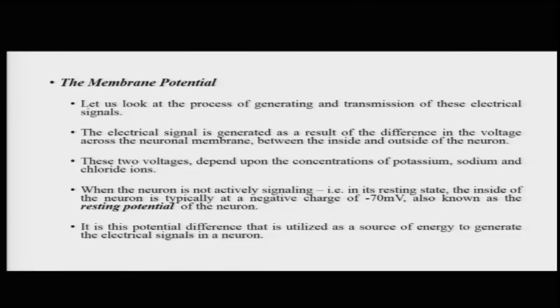When a neuron is not actively signaling or passing information to another neuron, this is referred to as the resting potential of the neuron, which is around minus 70 millivolts. This potential difference of minus 70 millivolts is what is utilized as a source of energy to generate an impulse and to pass on that impulse from one neuron to the other.